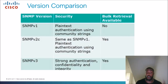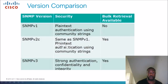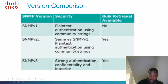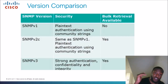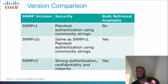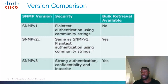Version 2C is essentially the same as SNMP 1, however it uses community strings for authentication — it's still plain text — but bulk retrieval is available. Version 3 is the most secure: it has strong authentication, confidentiality, encryption, and integrity — meaning nobody tampered with the data while it was in transit. Bulk retrieval is also available in version 3.